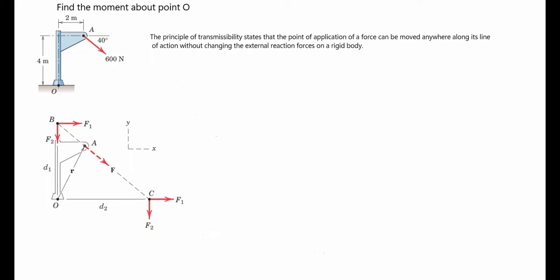If you look at the actual figure that was given to us, the force was applied at point A. But from the free body diagram that I have here, we have been able to transmit the force from point A to point B and then C. I'm going to use this to find the moment. You can actually choose to do it for only point B or only point C — they will all give you the same answer — but in this case I'm going to solve for both points so that you can see how they work.